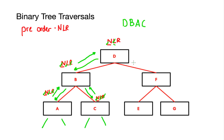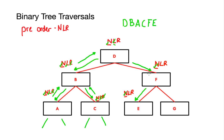The next step is to traverse the right subtree of D, which points me to F. I write my rule — node, left, right — at F and write down the node F. I then move on to traversing the left subtree of F. Starting with node E, I take the node E, check the left subtree which is non-existent, then check the right subtree which is also non-existent, completing the node-left-right rule at node E.